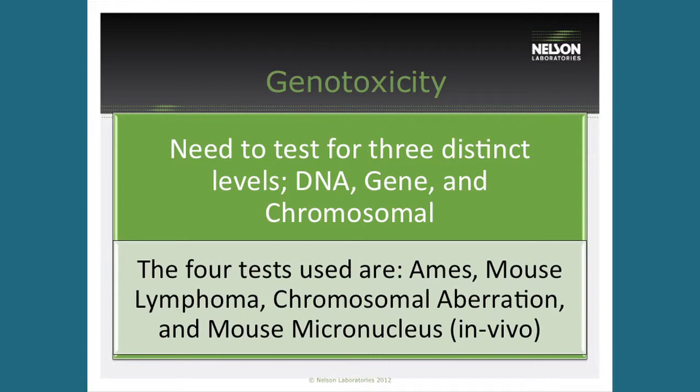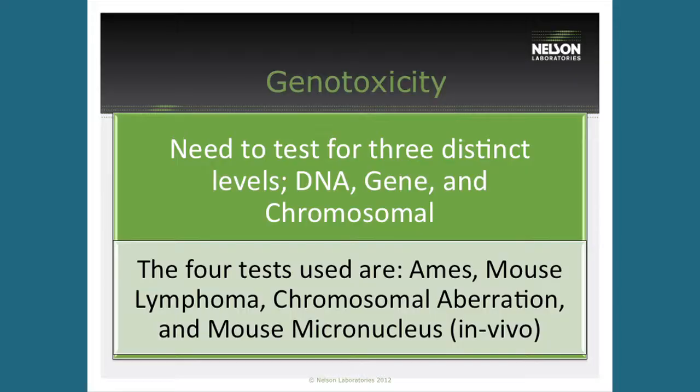The first thing we want to talk about is the spirit of genotoxicity. For genotox, we have to look at three distinct levels: we have to look at DNA, we have to look at the genes, and then we have to look at the chromosomes. We use four tests to evaluate those three levels: the Ames test, the mouse lymphoma, the chromosome aberration, and an animal test — the mouse micronucleus. So we have three in vitro tests and then the animal test, which is the mouse micronucleus test. Those four tests are our toolbox to evaluate genotoxicity.